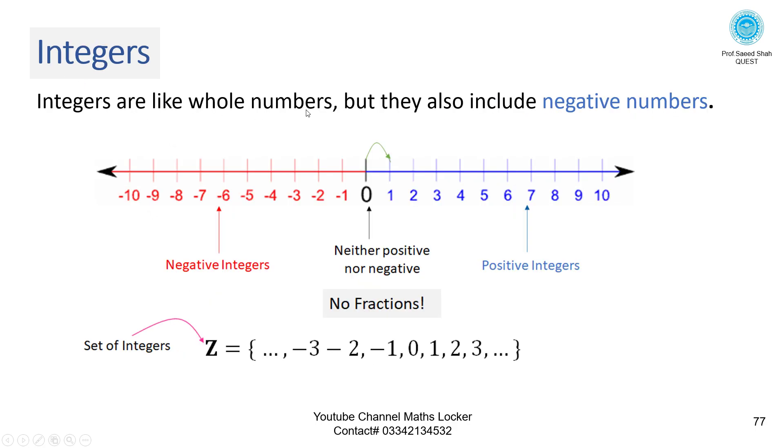Integers are like whole numbers but they also include negative numbers. On the number line, jump from 0 to negative numbers and positive numbers. Set of integers. No fractions.